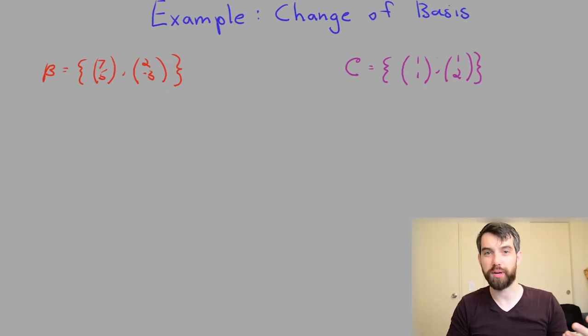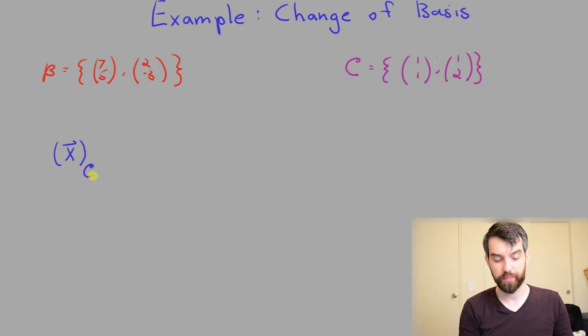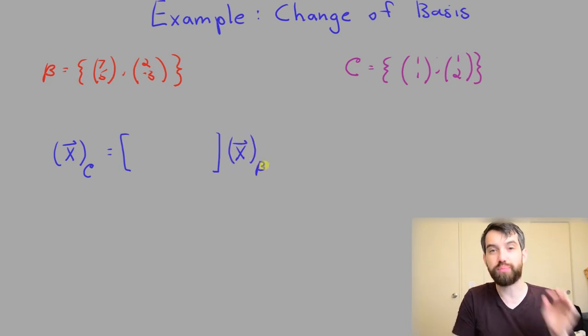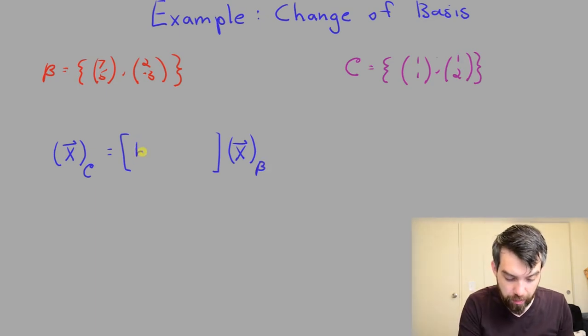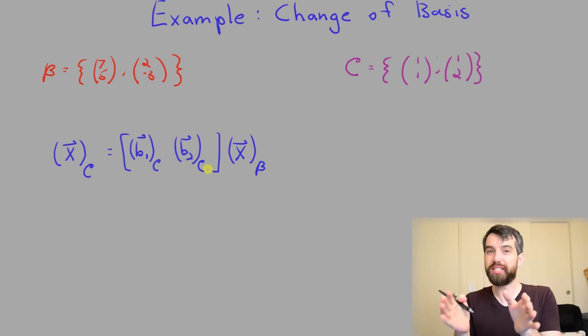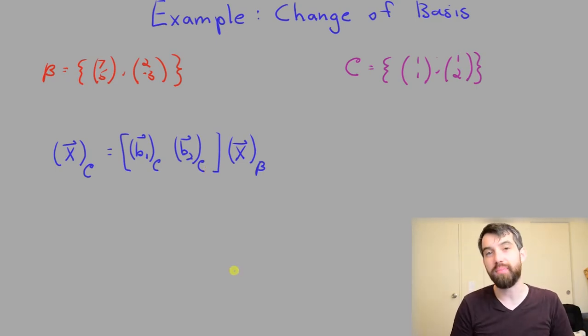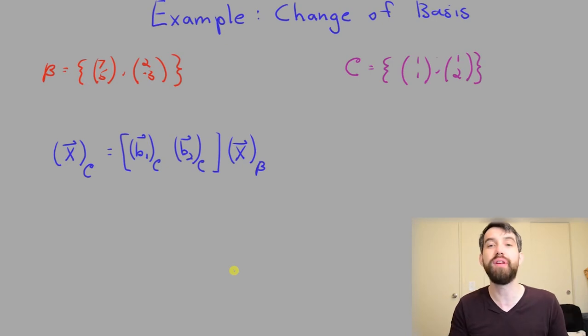I'll remind you how the formula worked. Suppose I was interested in figuring out what some particular vector X was if I could express it in the C basis. Then what we decided was that this was going to be some big matrix multiplied by that same vector X, but this time the vector X is expressed in the B basis. And then what went into the matrix? You put the basis vectors for B in there, that is the B1 and the B2, but you had to express both of these vectors in the C basis. So in other words, if you could convert just the B basis vectors into the C basis, then you could convert everything into the C basis by multiplying by that same matrix.